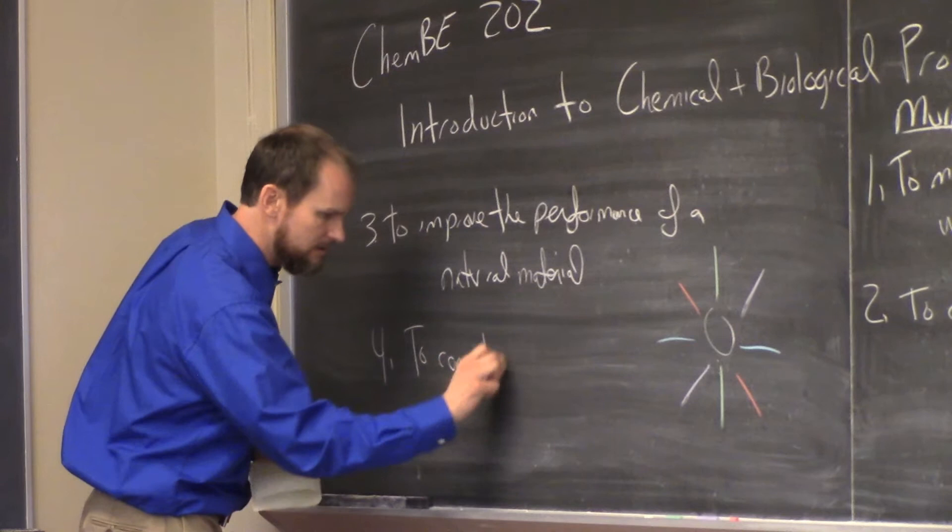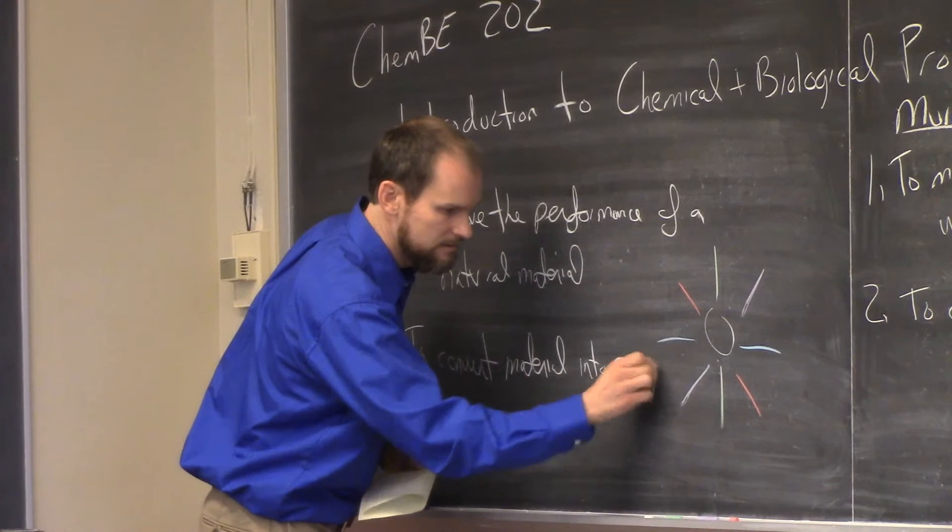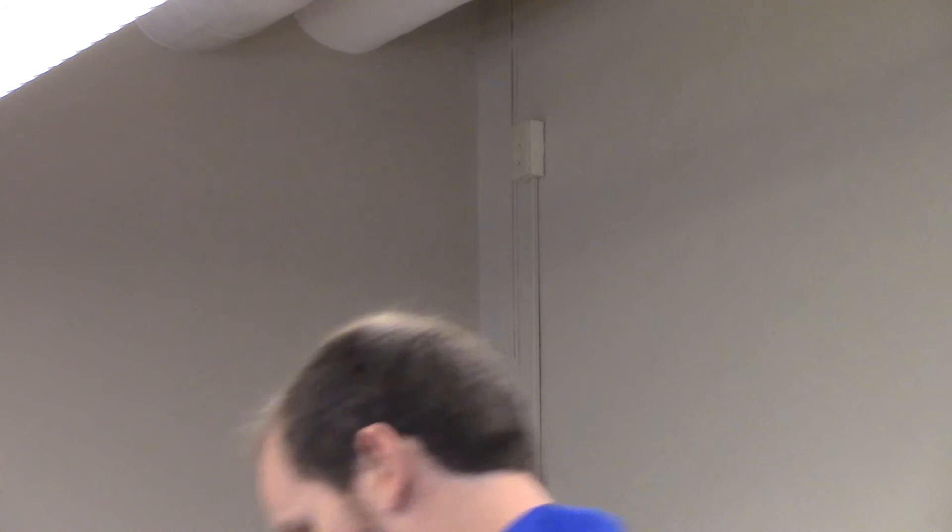And for the last one: to convert material into energy. A lot of chemical engineering is about taking chemicals to turn it into energy. Fossil fuels, coal, oil, especially today with the shale gas and the shale oil that's booming in this country, in Canada. And how do we do that? How do we convert that material into energy? How do we do it efficiently? How do we do it cleanly? How do we do it safely?